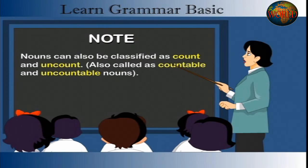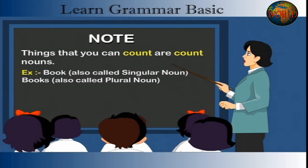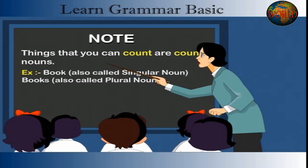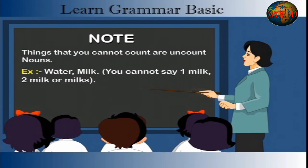Nouns can also be classified as count and uncount, also called countable and uncountable nouns. Things that you can count are count nouns — for example, 'book' (singular noun) and 'books' (plural noun). Things that you cannot count are uncount nouns — for example, water, milk. You cannot say 'one milk', 'two milk', or 'milks'.